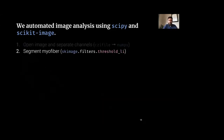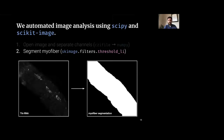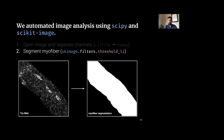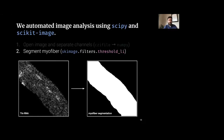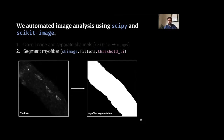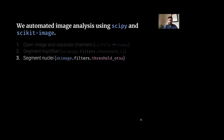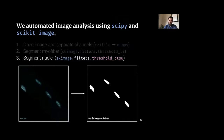Next we segmented the myofiber from the background using an automated thresholding algorithm based on Li's method in scikit-image, which robustly separated the fiber from background and created a mask for analyzing RNA density and dispersion. We then performed a similar thresholding operation on the nuclei channel to create a nuclear mask. We also subtracted the nuclei segmentation from the fiber segmentation to obtain a cytoplasm mask, which was useful for a variety of analysis goals.